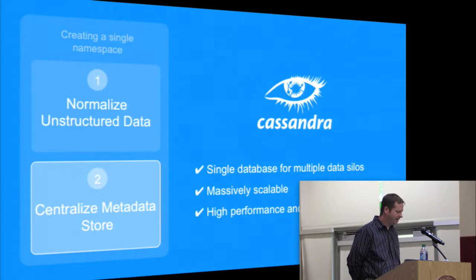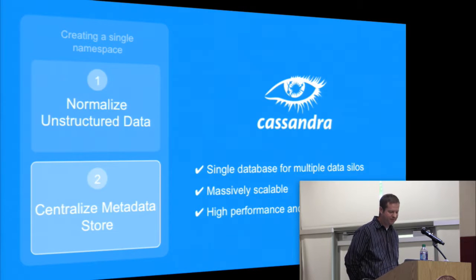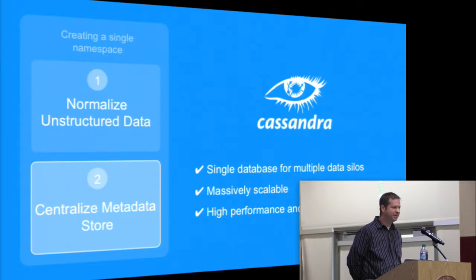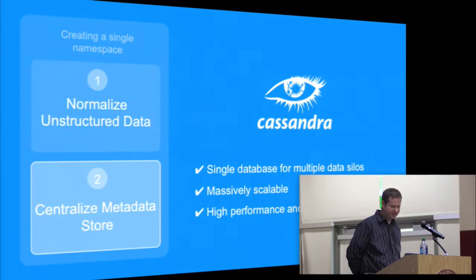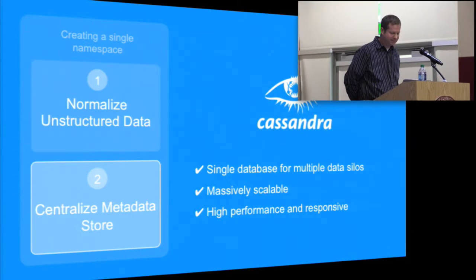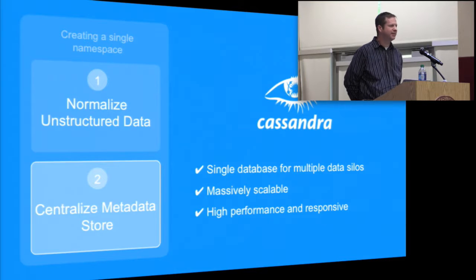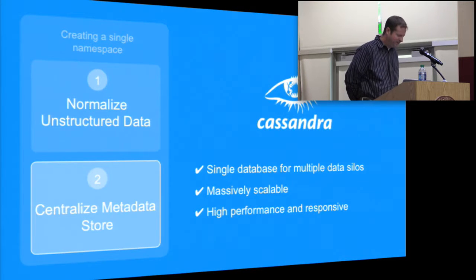We're using a cloud storage for this purpose. We're using a Cassandra database that lives across Azure and Google Compute Engine. This could also reside on premise, but for our scalability purposes and the way that we're serving this to our customers, which are mostly in private industry, this really makes a lot of sense for them.